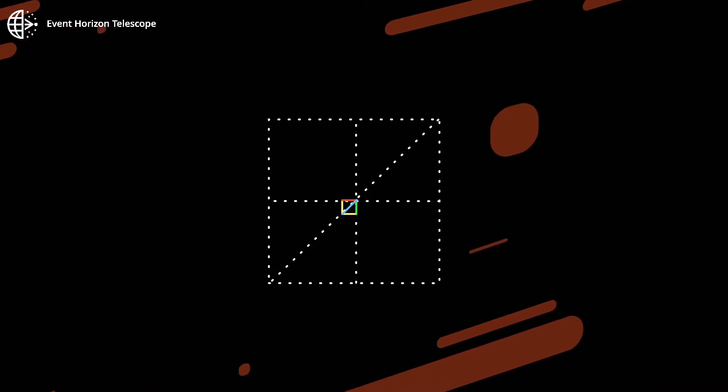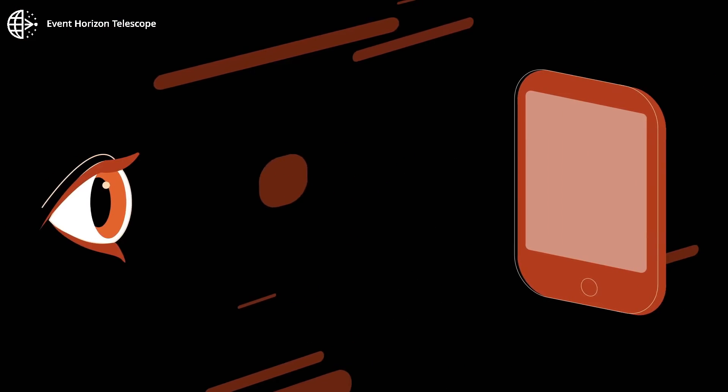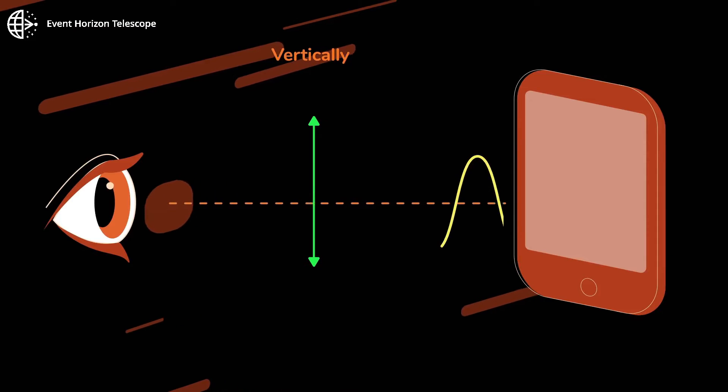If the waves have a preferred direction of oscillation, they are polarized. For example, light from your phone is vertically polarized.